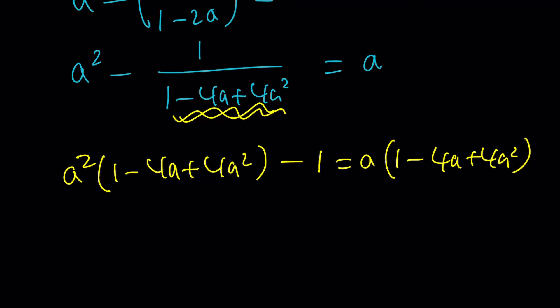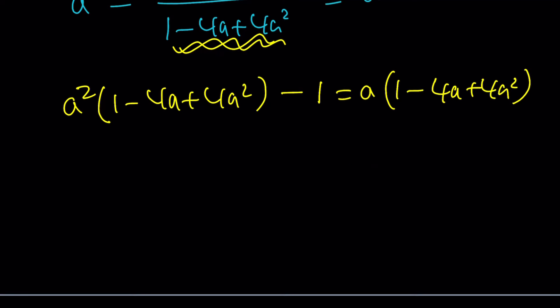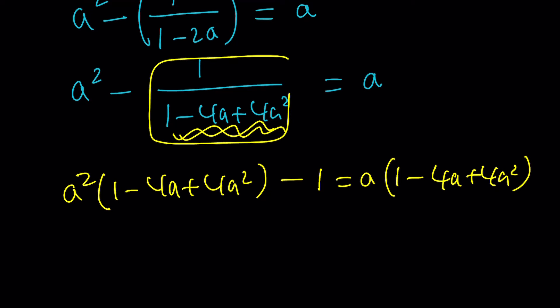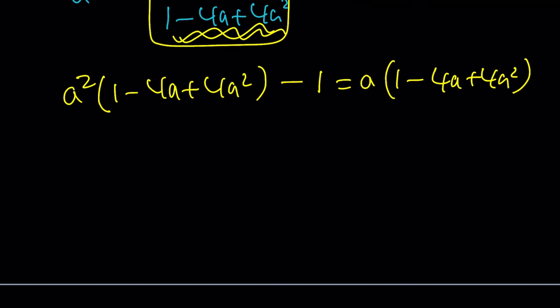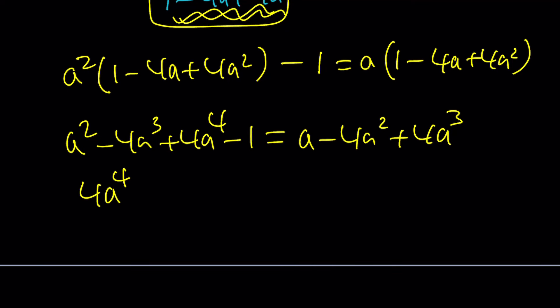Let's go ahead and distribute this whole thing. a squared minus 4a cubed plus 4a to the fourth power minus one equals a minus 4a squared plus 4a cubed. Let's put everything on the same side. This is going to be 4a to the fourth power. Then we have 4a cubed and another 4a cubed with two minus signs, so minus 8a cubed. Then we have an a squared and we're going to bring in a positive 4a squared. That's going to make 5a squared. And then finally, we have a minus a and minus 1 equals 0.